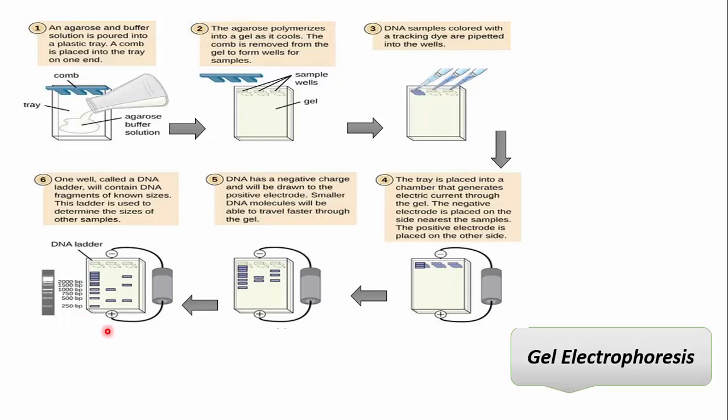We compare our DNA samples with the DNA marker and can easily find out the size of the DNA in the sample by matching them against the closest band in the marker. Now let's summarize the main steps in gel electrophoresis.